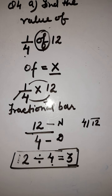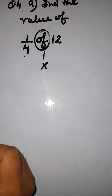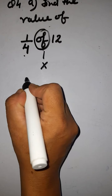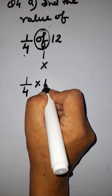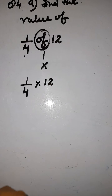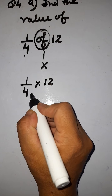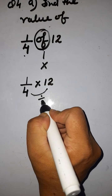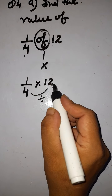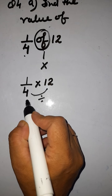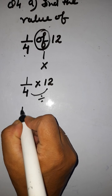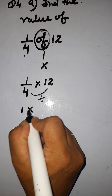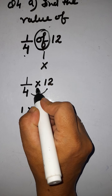एक तो आपका ये method है. Next method is: we know 'of' means multiplication symbol. Again we'll write it here — 1 out of 4 multiplied by 12. Now students, this will divide each other. ये आपका numerator ही हो जाता है, ये आपका denominator ही होता है. तो यहाँ पर आपका 1 अपनी ही place में रहता है, बीच में multiplication का symbol है.